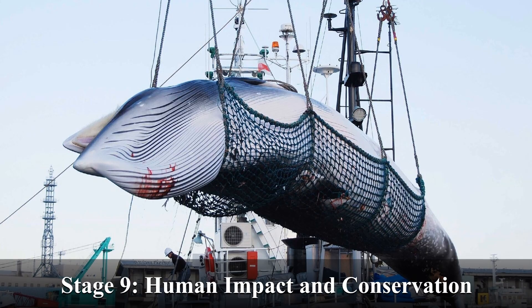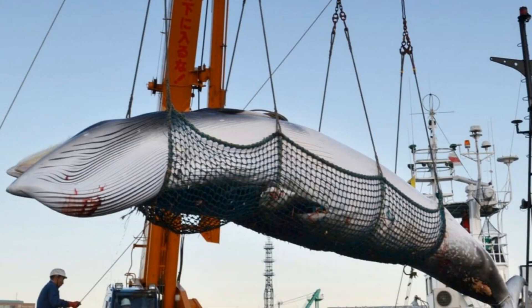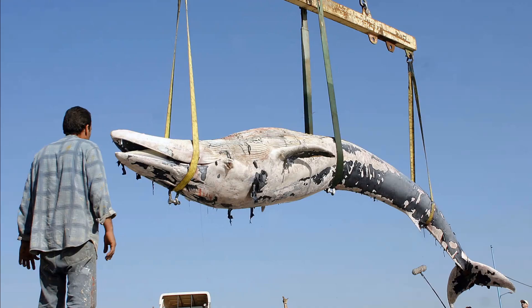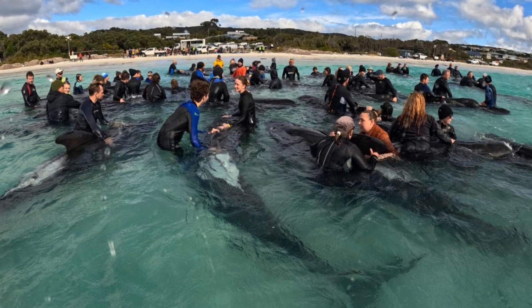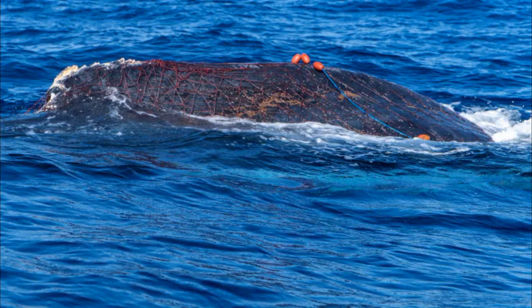Stage 9: Human Impact and Conservation. Period: Holocene to Present, 10,000 years ago to today. In recent history, humans have had a profound impact on whales. Whaling for meat, oil, and other products led to a significant decline in many whale populations. However, in the 20th century, conservation efforts led to the ban on commercial whaling, and many whale species have shown signs of recovery. Today, ongoing threats include habitat degradation, climate change, ship strikes, and entanglement in fishing gear.